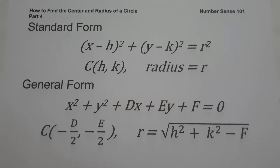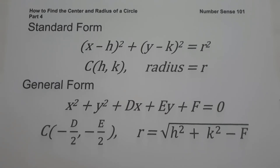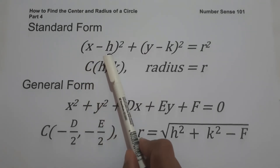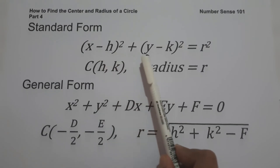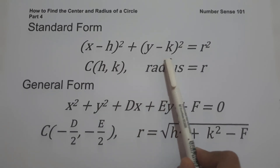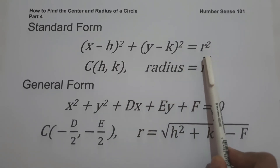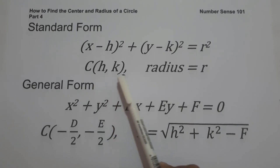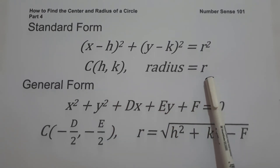For today's video, we are going to talk about how to find the center and radius of a circle. There are two different equations that you need to remember. The first one is the standard form: (x minus h) squared plus (y minus k) squared equals r squared, where the center is (h, k) and the radius is equal to r.